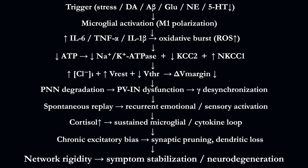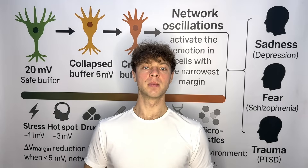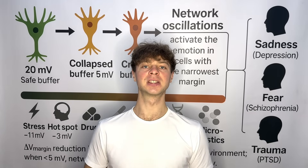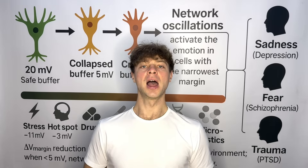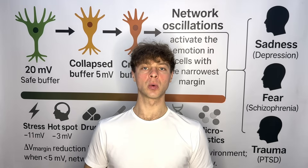This mechanism may link ADHD, schizophrenia, depression, PTSD, Alzheimer's disease, autism, epilepsy and addiction — all as different expressions of one phenomenon: the critical narrowing of the excitability margin. This model may unify several psychiatric and neurodegenerative disorders, and I invite researchers worldwide to challenge or falsify it.